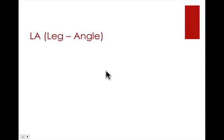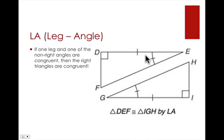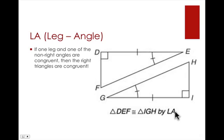LA stands for leg-angle. It means you're given one of the legs and an angle that's not the right angle, and those parts are congruent. If you have a leg and one of the non-right angles congruent, then you can say both triangles are congruent. For example, we have a leg that makes up the right angle, a congruent leg, and a non-right angle — E and G are not the right angles — so triangle DEF is congruent to triangle IGH by the LA theorem.